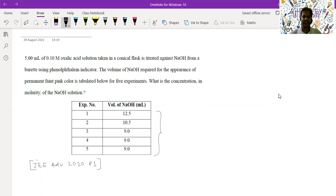If you consider all these five observations and take the average, the average volume of NaOH consumed will be 12.5 plus 10.5 plus 3 times 9 divided by 5. If you calculate it, this will be 23 plus 27 by 5, that is equal to 10 mL.